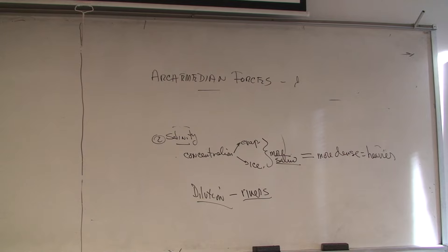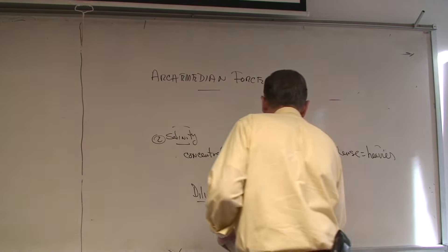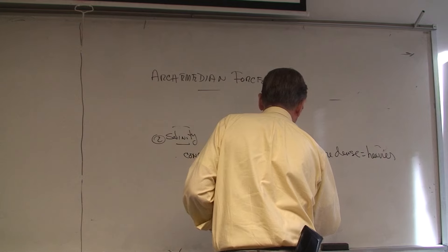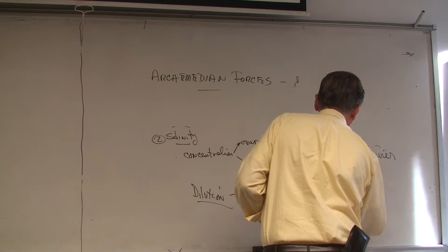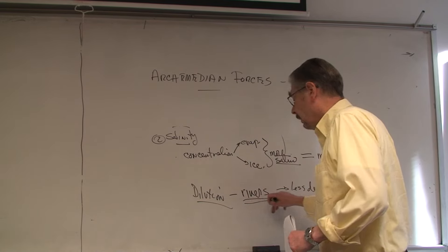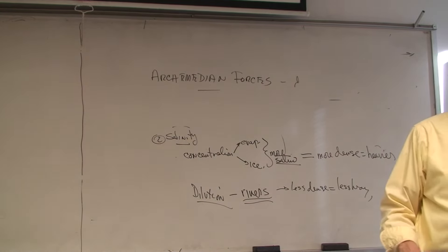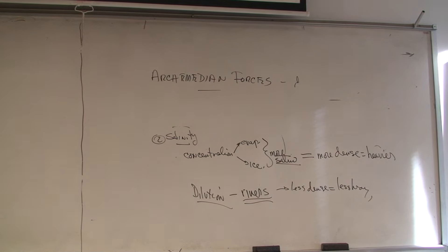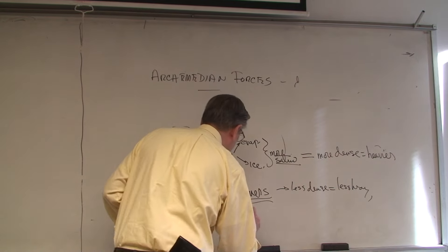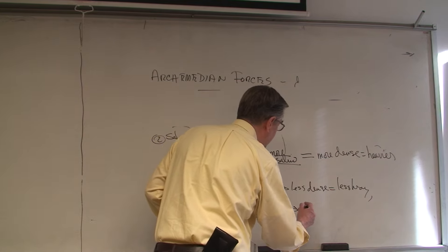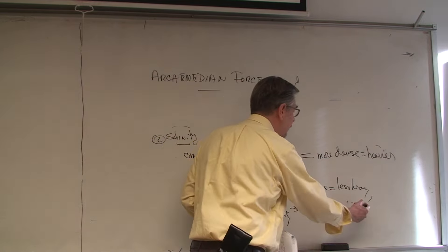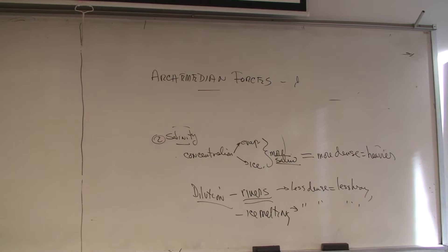Rivers flowing in are going to cause the water to be more dilute, making it less dense and less heavy. In addition to rivers, you could have icebergs melting. Same thing — it's fresh water, so it makes the water less dense and less heavy.